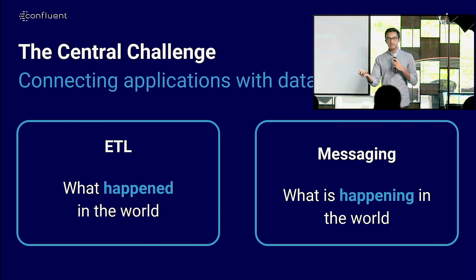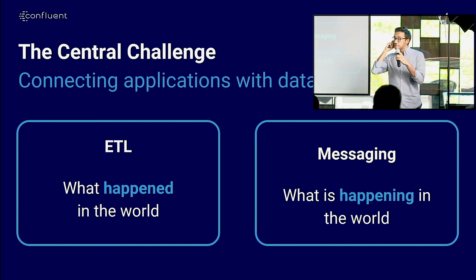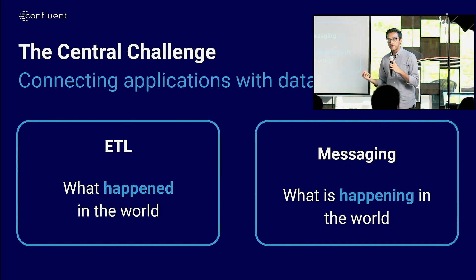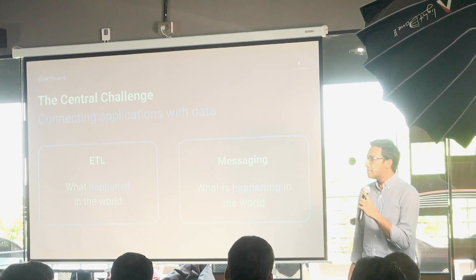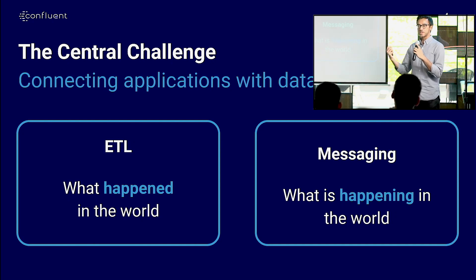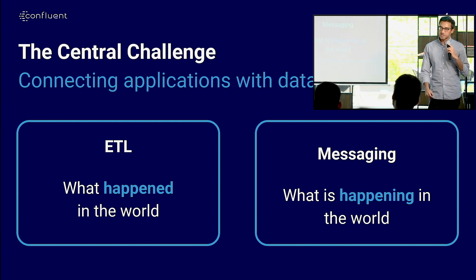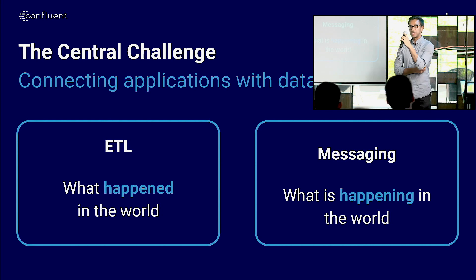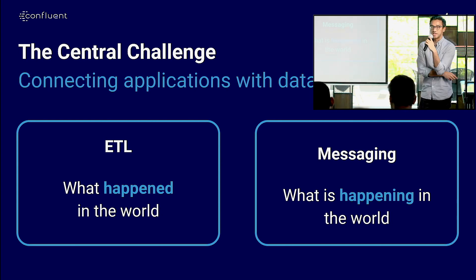But what ETL really did was extract data, transform it, and then load it somewhere. By the time you actually look at the data, it gives you a retroactive view of what happened in the world. Then you had messaging products, which allowed you to process messages in real time, in a very low latency fashion. But these messages are processed in isolation — only that one specific message — and you don't have a historical context. What Kafka aims to solve is to bring these two worlds together: handling really high throughput like an ETL system, but processing messages in real time in a low latency fashion like a messaging system.